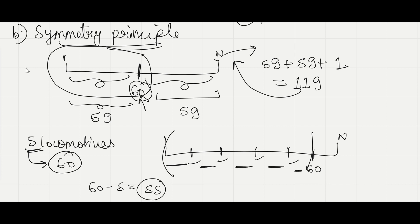So in each segment, we have 11 locomotives. So a segment after 60 would also have 11 locomotives according to the symmetry principle. So in total, our estimate would be 60 plus 11 locomotives, that is 71. So in this case, our estimate would be 71.